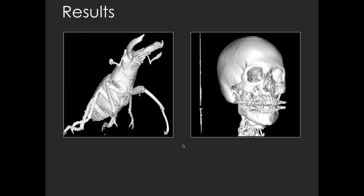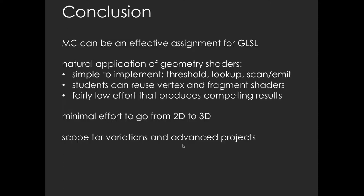In conclusion, this talk has shared experience with using marching cubes to teach GLSL concepts, including geometry shaders, uniform variables and buffer objects. It also offered an opportunity to revisit vertex and fragment shaders and line and triangle strips. A basic version of the algorithm is fairly straightforward to implement as a one to two week assignment. Instructors might present the 2D version as a lab exercise, in which case one week should be sufficient to complete the 3D version. Alternatively, instructors might cover the high level ideas and assign a week for each version. The assignment is fairly low effort and produces compelling results. It also offers possibilities for variations and advanced projects.